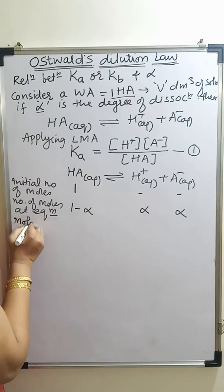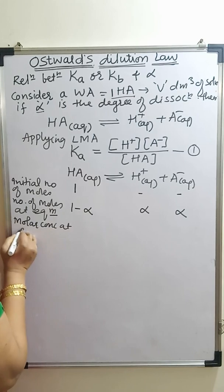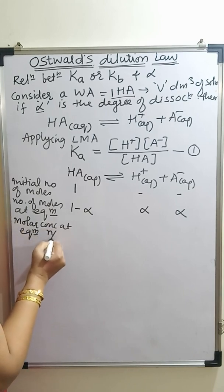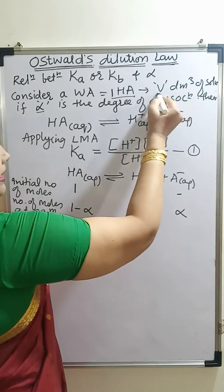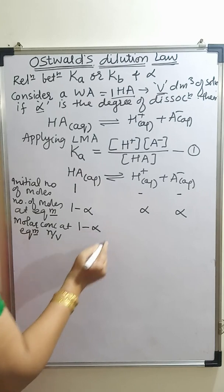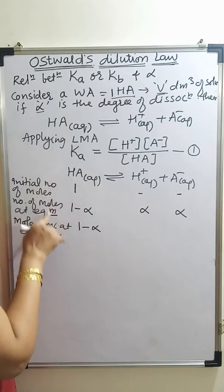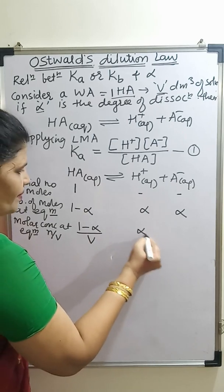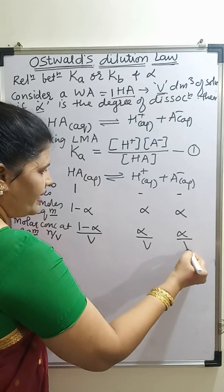Now let us consider the molar concentration at equilibrium. Molar concentration means N by V, and the volume taken is V dm³. So molar concentration of HA = (1 − alpha)/V, and for H⁺ and A⁻ it is alpha/V each. I will mark this as equation 2.